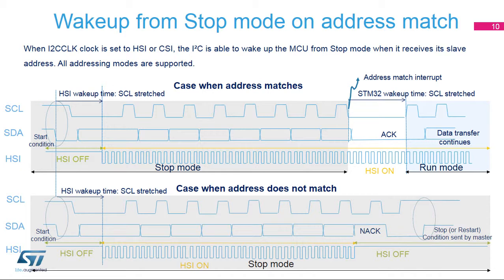After an address is received in stop mode, a wake-up interrupt is generated if the address matches the programmed slave address. If the address does not match, the high-speed internal oscillator is switched off, no interrupt is generated, and the device remains in stop mode. Clock stretching must be enabled because the I2C peripheral stretches the clock line low after the start condition until the high-speed internal oscillator is started. After having received a matching address, the I2C peripheral also stretches the clock line low until the STM32 device is awakened.